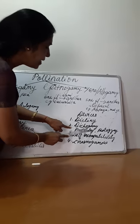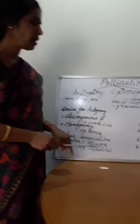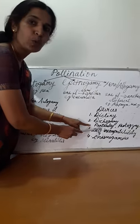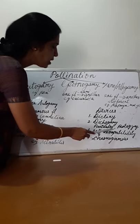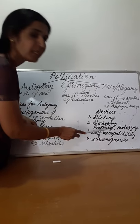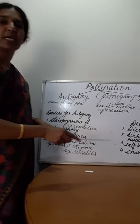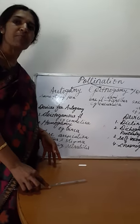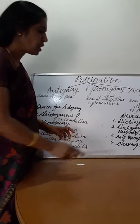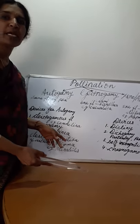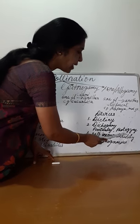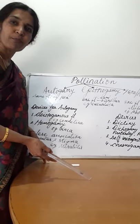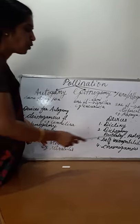The second one is dichogamy. In dichogamy there are two types. One is protandry — the anther matures first, before the stigma matures. That is protandry, so there is no possibility of self pollination. The second one is protogyny — the stigma matures before the anther matures. That is protogyny. This is why it is known as dichogamy.